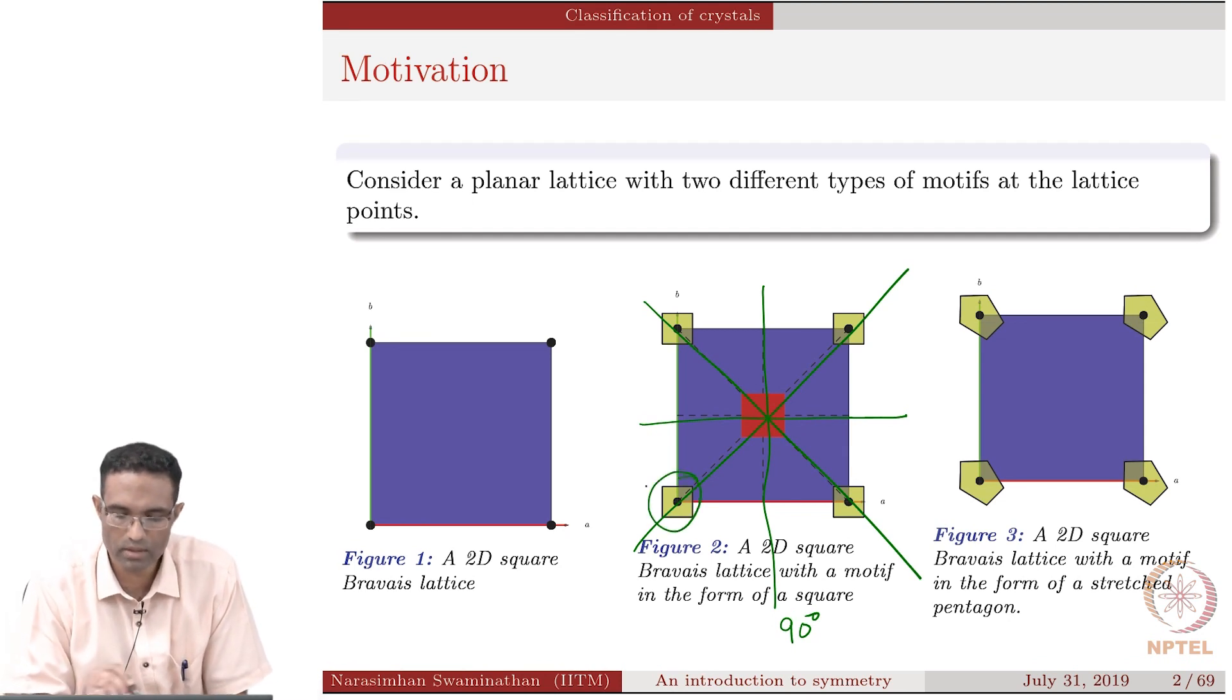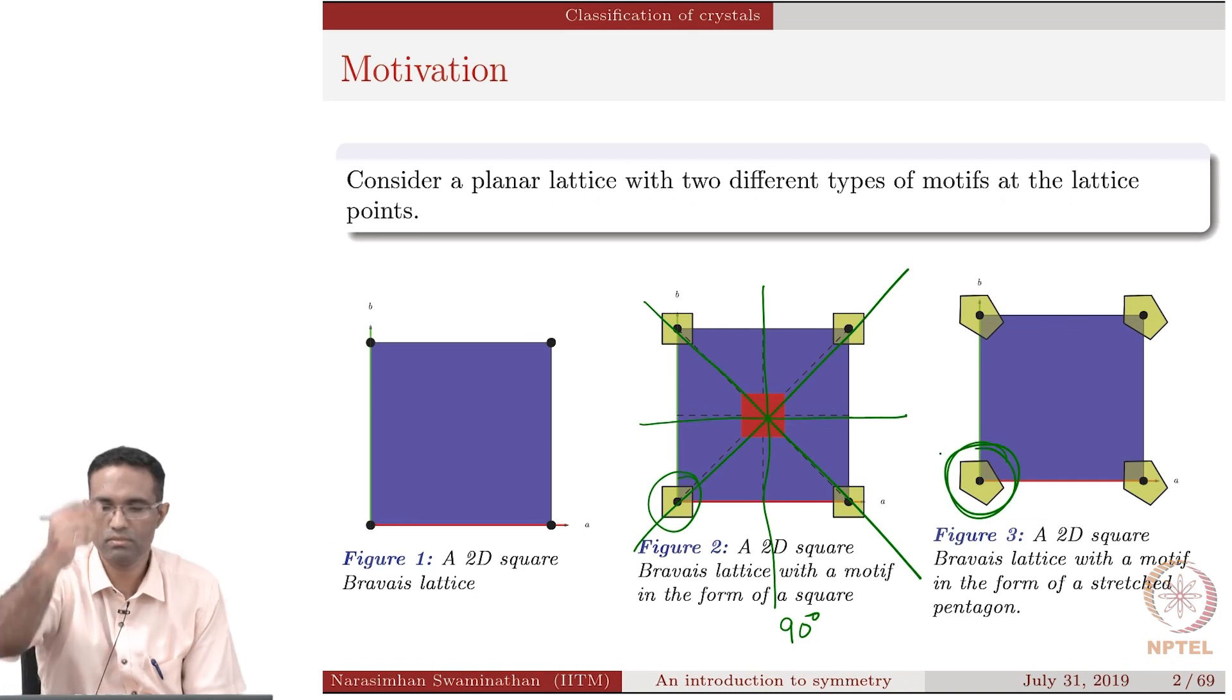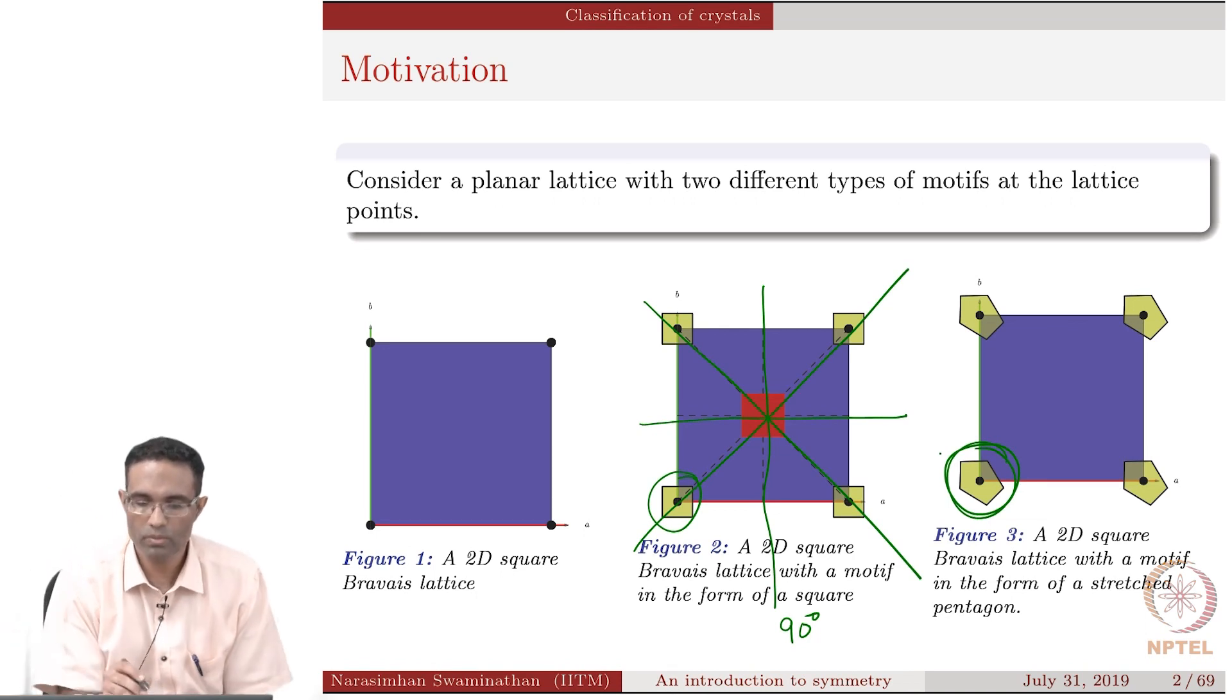Now, what I am going to do is, I am going to take this out and replace it with a stretched pentagon and it is somewhat oriented in a weird manner. Now, this one, this the first square lattice that we talked about also had the same symmetry as here, right?